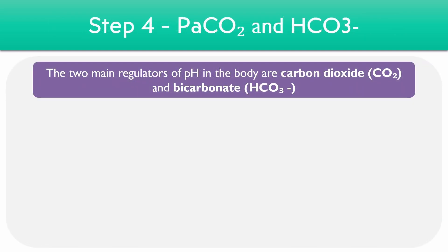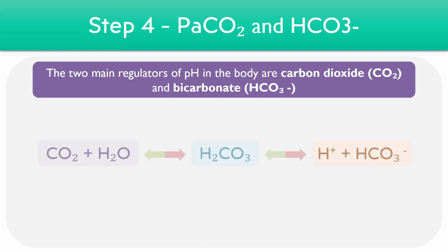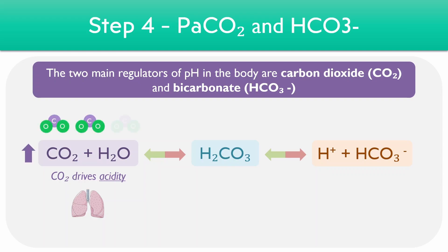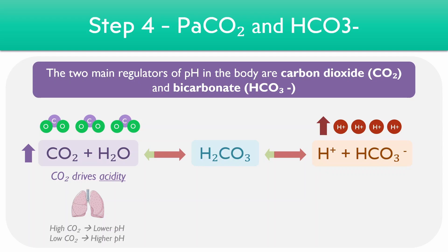The pH of our body is regulated by multiple factors, but two of the main regulators are carbon dioxide and bicarbonate, or HCO3-. A key equation for pH control involves both carbon dioxide and bicarbonate being converted to carbonic acid in a reversible reaction. Importantly, carbon dioxide drives acidity and is generally controlled by the lungs. When there's an increase in the level of carbon dioxide, it causes the equation to shift to the right-hand side, producing more hydrogen ions, leading to more acidic conditions. In other words, a high CO2 level leads to a lower pH, and a low CO2 level leads to a higher pH.